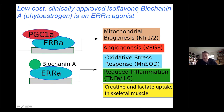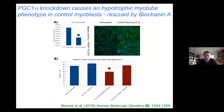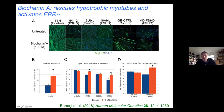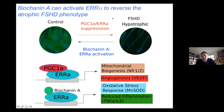We were interested because there are isoflavones — specifically biochanin A — that can bind ERRα and activate it in place of PGC1α. It's a nutritional supplement, so hopefully it's an accessible intervention. If you knock down PGC1α in human cells, as expected from the transgenic mice, you see hypotrophic myotubes. But if you add biochanin A to substitute for PGC1α, you can recover myotube size. In FSHD cells, you don't have to knock down PGC1α because it's already lower — biochanin A can rescue myotube differentiation and restore size by reactivating ERRα.